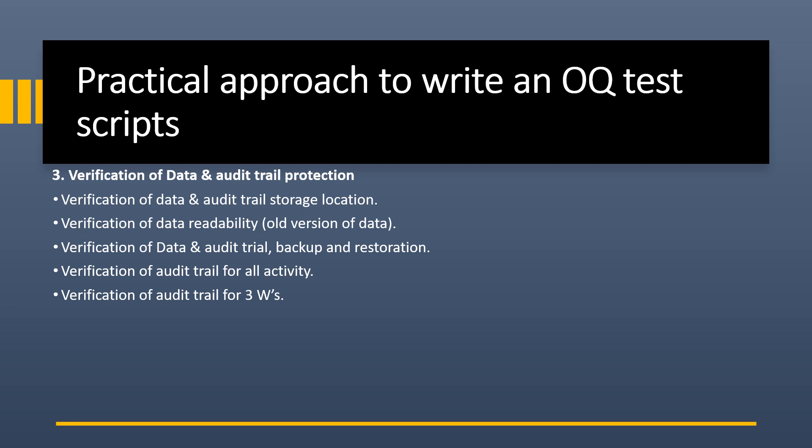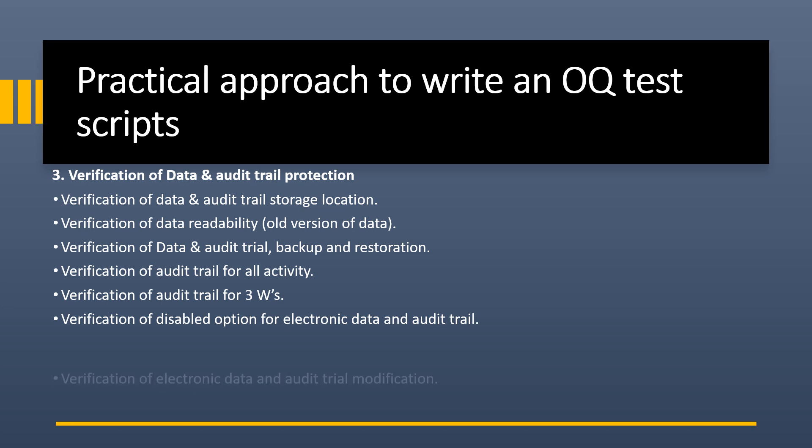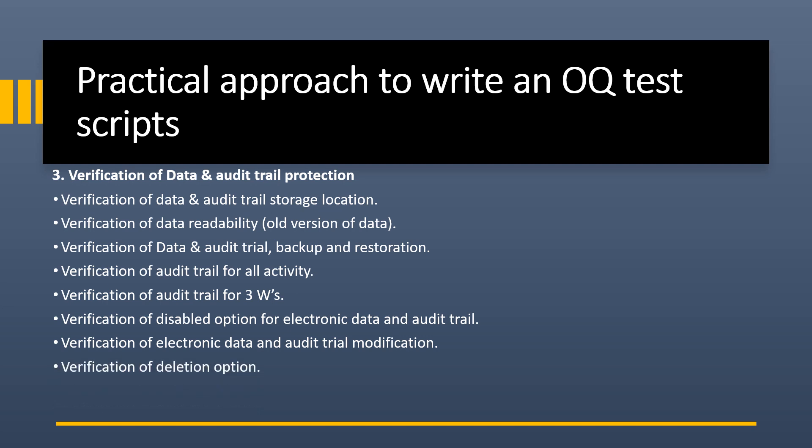Next is verification of disabled option for electronic data and audit trail — there should be no option to disable generation of electronic reports or audit trails. Next is verification of electronic data and audit trail modification — data and audit trails generated by the system should not be editable. Next is verification of deletion option — no one should be able to delete any data or audit trail.